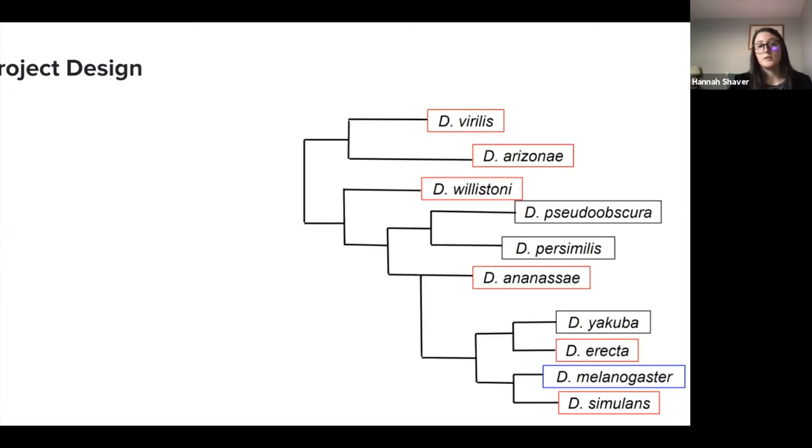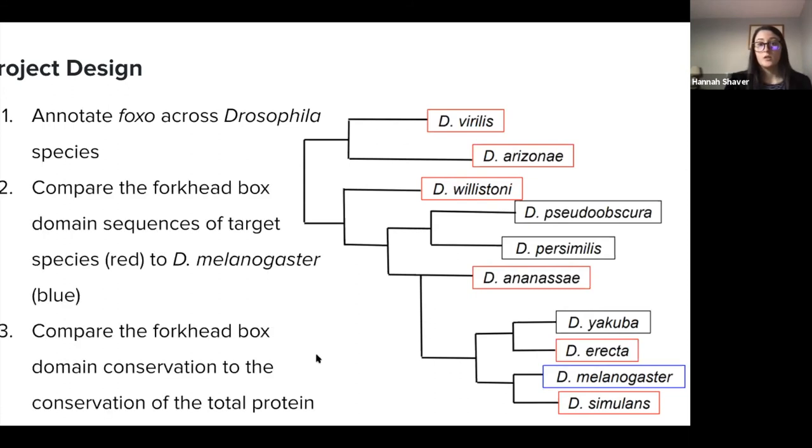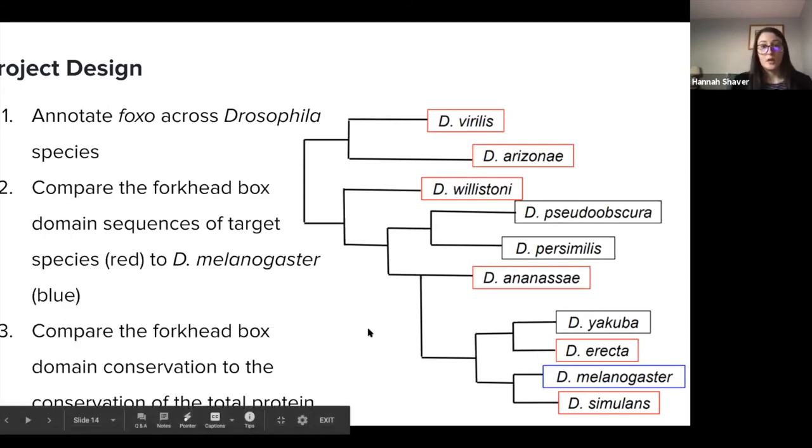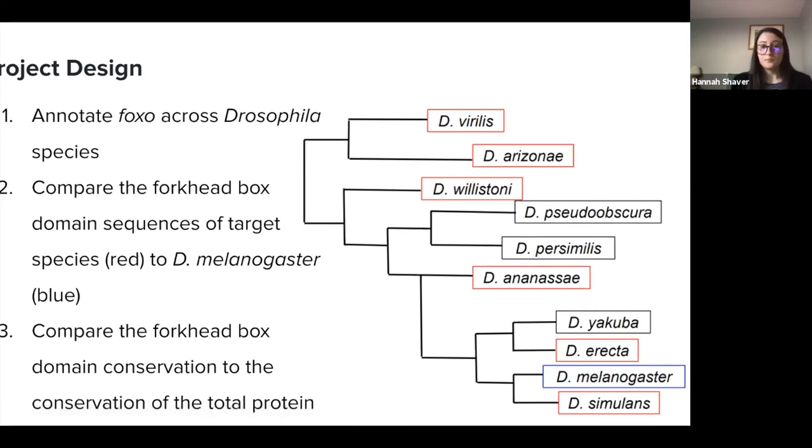In this project we use the species listed in the phylogenetic tree shown on the right. First we annotated FOXO across Drosophila, then we compared the forkhead box domain sequences of the target species shown in red boxes to our comparison species D. melanogaster shown in the blue box. Then we compared the forkhead box domain conservation to the conservation of the whole protein.